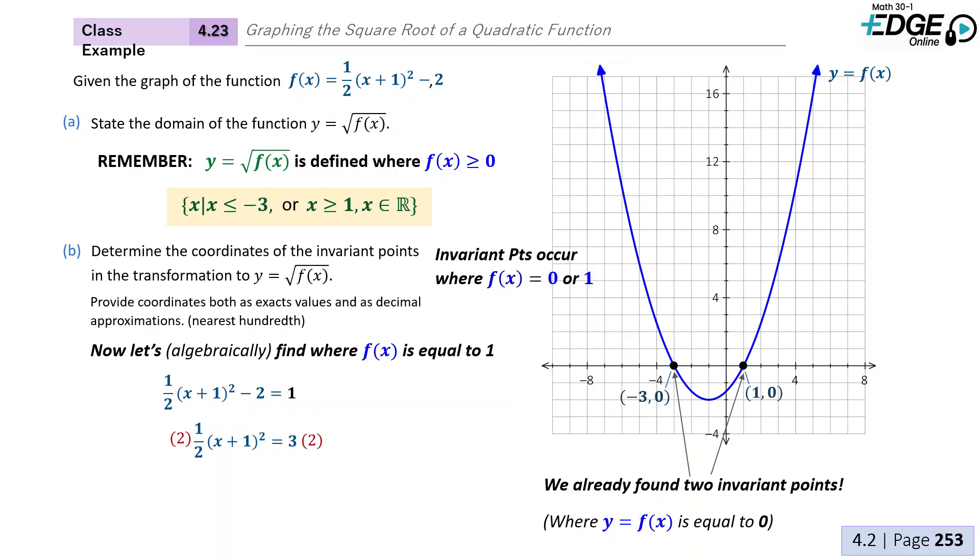Next, we're going to multiply both sides by two to get rid of the half. And then at this point, our x is still trapped inside the brackets here. We have to remove the squared, so we're going to take the square root of both sides.